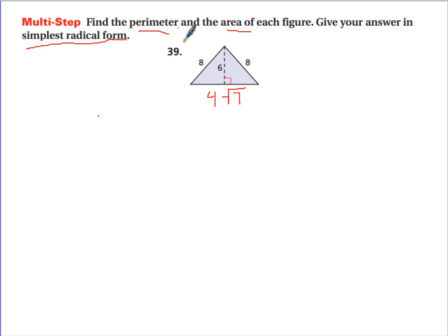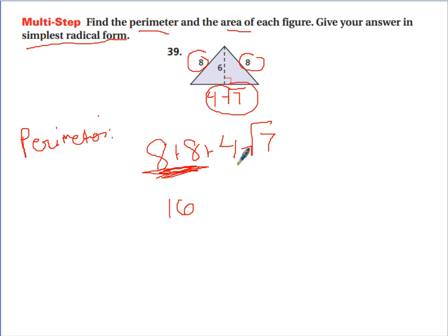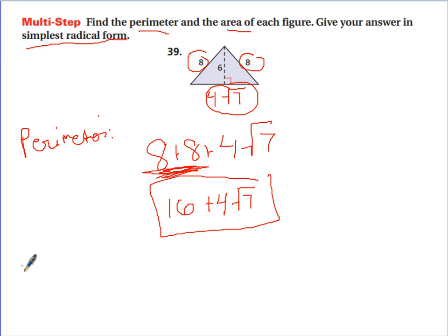The perimeter is where we add up all the sides: 8 plus 8 plus 4 square root of 7. The 8s add together to give 16. The 4 square root of 7 can't be added to 16, so it just hangs out by itself. Perimeter equals 16 plus 4 square root of 7.